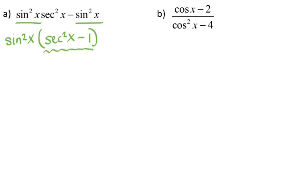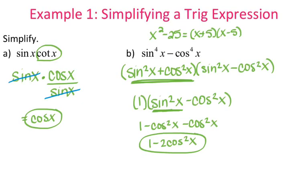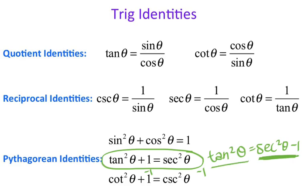Now let's see if we can make a substitution for secant squared of x minus 1. Going back to the identities list, we have secant squared theta equals tangent squared theta plus 1. Since we have secant squared minus 1, we can subtract 1 from both sides to get tangent squared of theta equals secant squared theta minus 1. So we can substitute secant squared of x minus 1 with tangent squared of x.